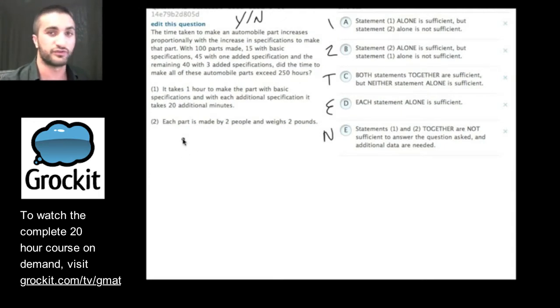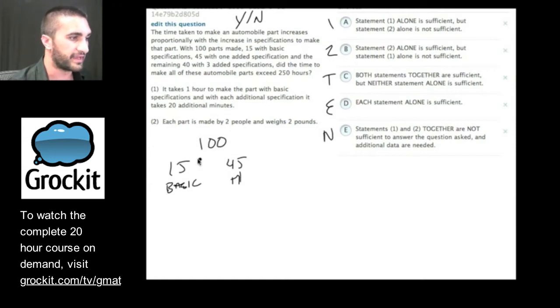The time taken, and you can sort of do this as you're reading the question, and some of the situations will see me doing it literally as we read it for the first time. With 100 parts made, so I just rewrite everything and make my own version of the question. With 100 parts made, 15 with basic, 45 with plus one specification, and the remaining 40 with plus three specifications, did the time to make all the automobile parts exceed 250 hours?